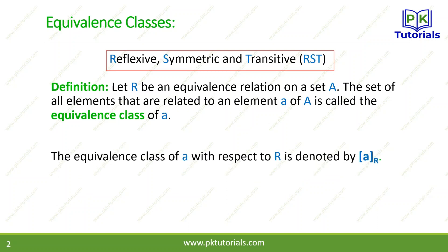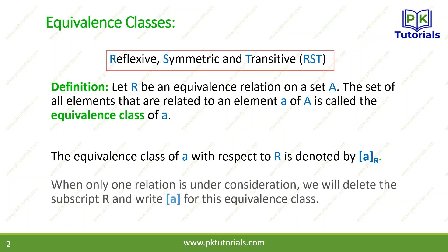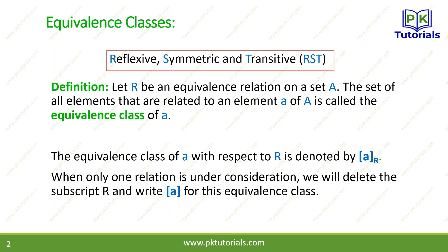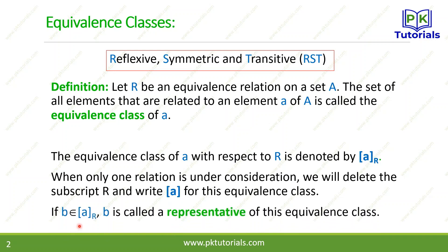The equivalence class of A with respect to R is denoted by a specific notation. When only one relation is the representative of this equivalence class.